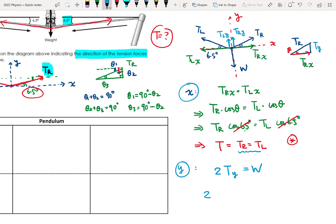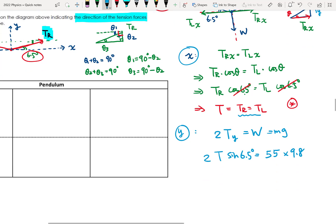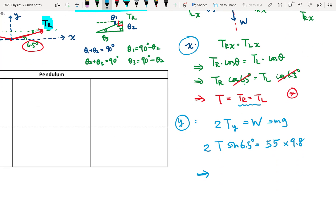So I got 2 T, and it will be sine theta, sine 6.5 degrees, and equals to W. W is what? W is M G. M is 55 kg, and G is 9.8. So then we can get T is how much? T is 55 times 9.8 divided by 2 times sine 6.5 degrees. And now we need to use calculator.